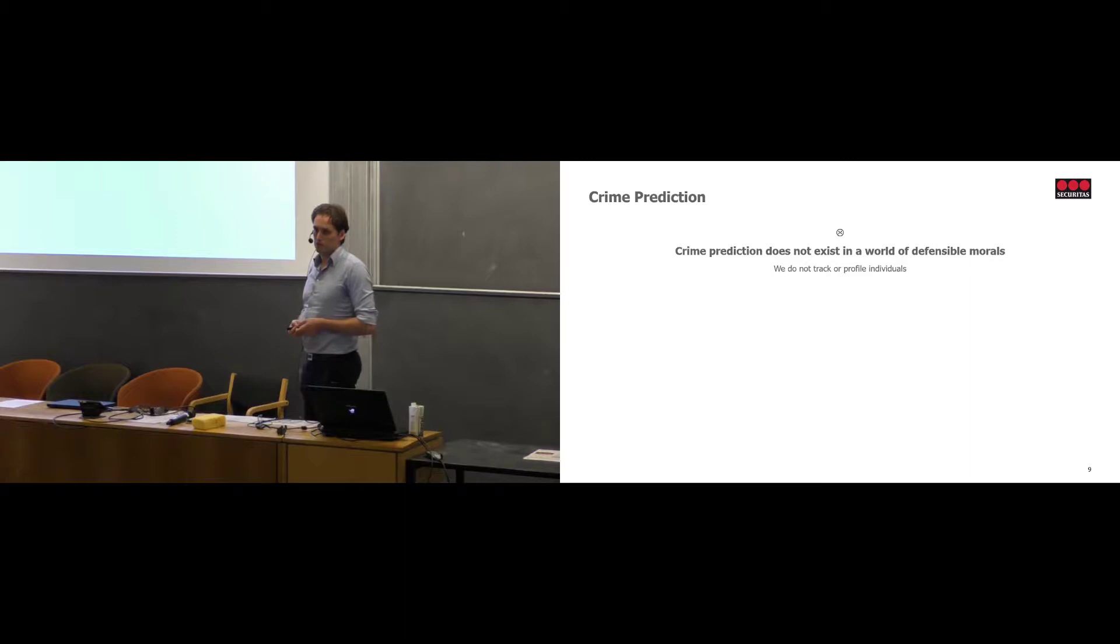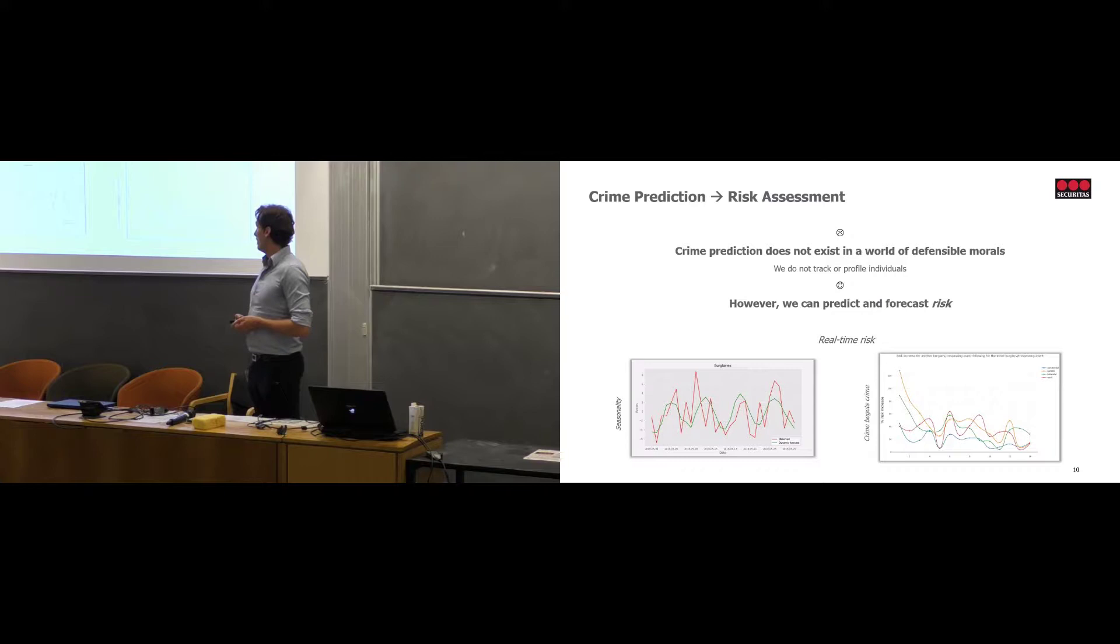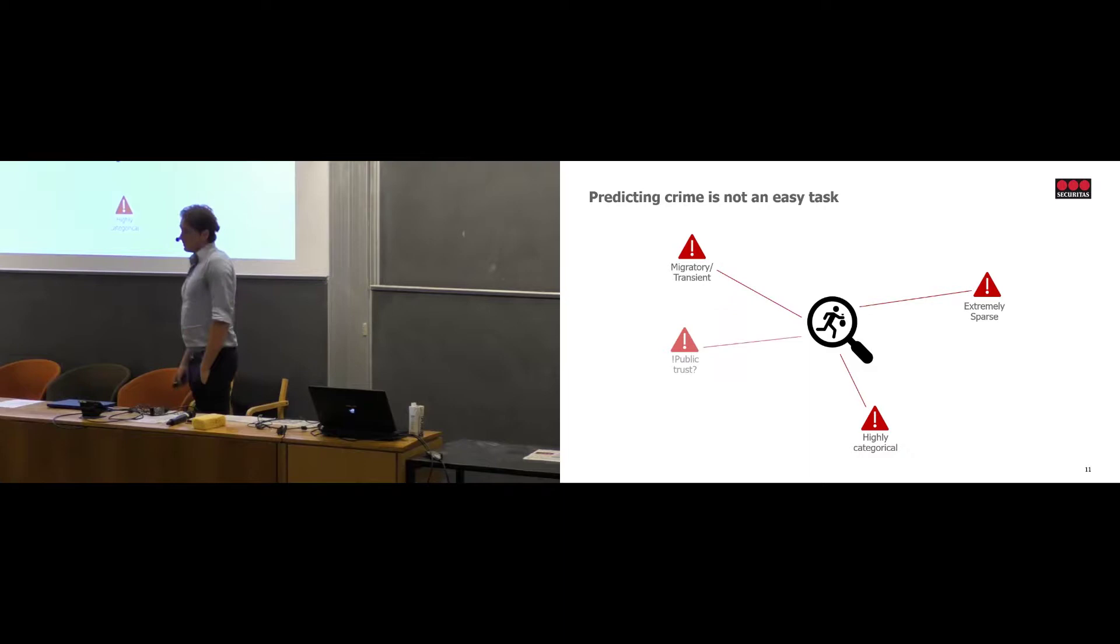So crime prediction does not exist in a world of deterministic moralism. I mean, when we do not track or profile individuals, we can't say when crime will happen. Because you can track an individual and say they're planning a crime, so you're predicting it's probably going to happen. But if you don't do that, and we don't do that, we don't want to move into that entire gray zone, then it's not possible. However, we can predict a forecast risk. We can predict when there's an increased chance of something to happen. Because this follows seasonal patterns. Here you can see actual data that we have observed that dynamic forecast. So we're trying to predict the risk following what we're actually seeing. There's also the whole broken window of crime begets crime kind of stuff. So for certain types of crime, when a crime happens, it increases the likelihood of crime happening in the neighborhood in the following days.